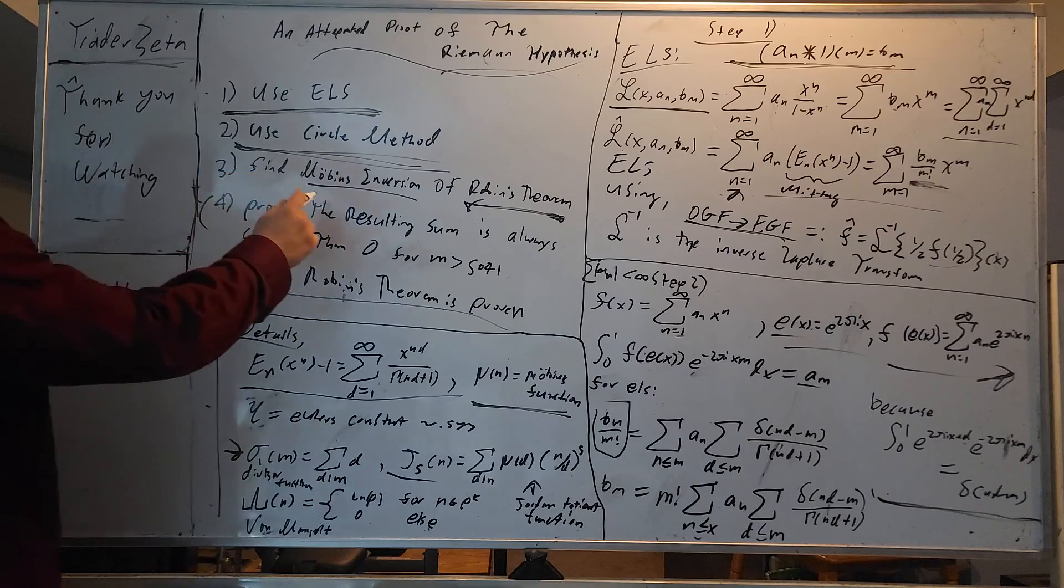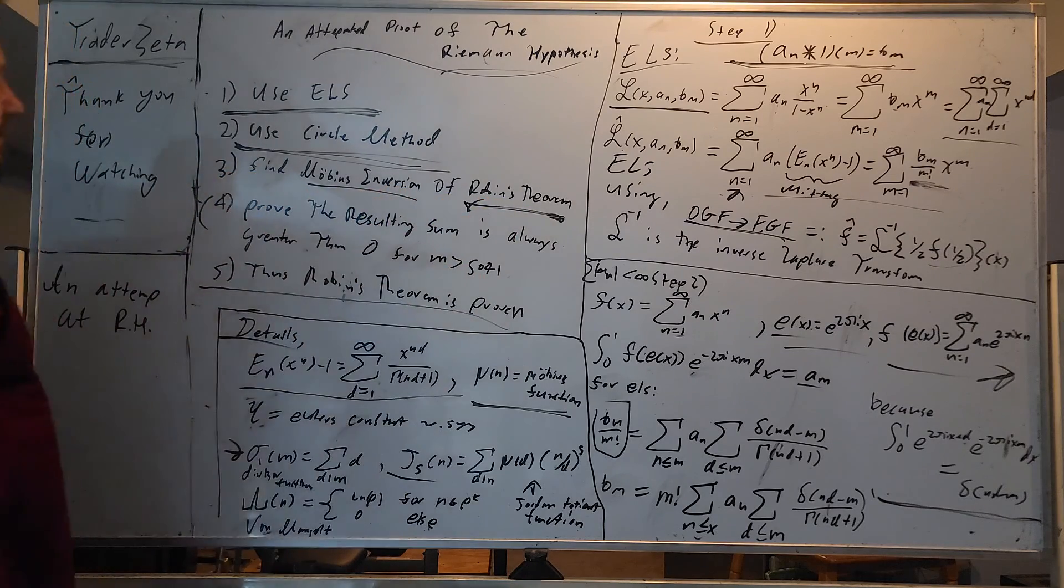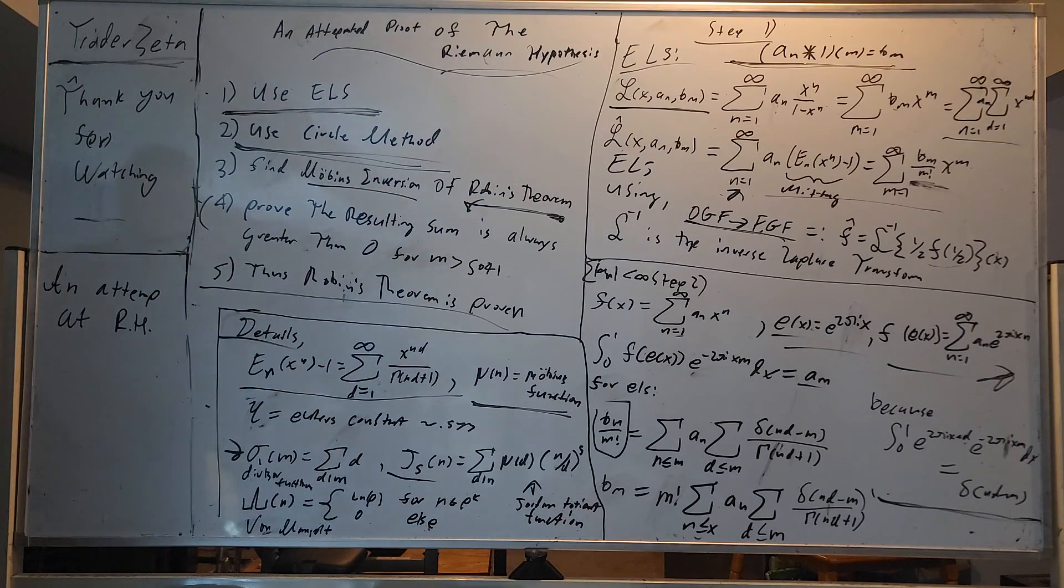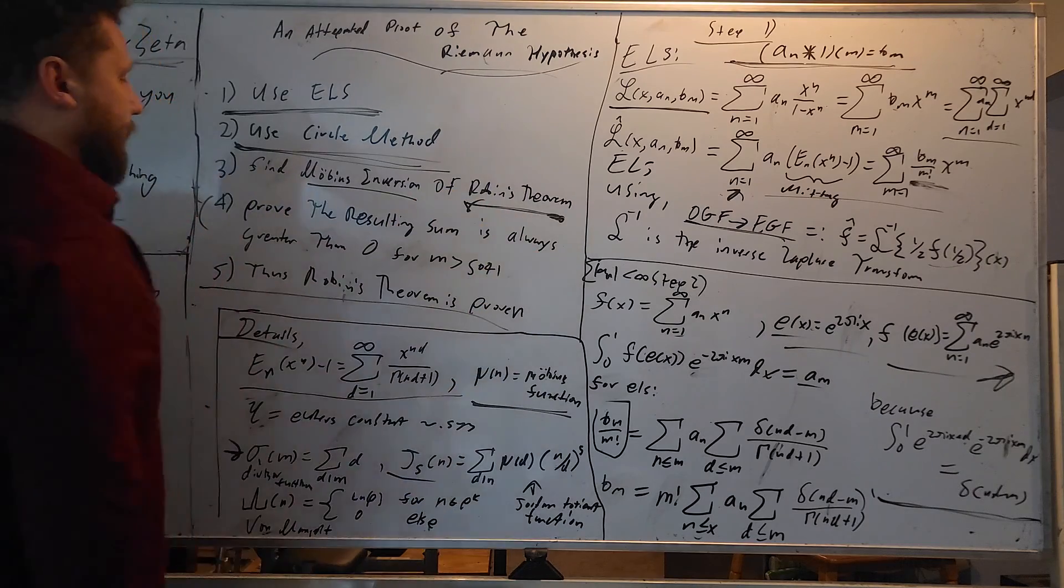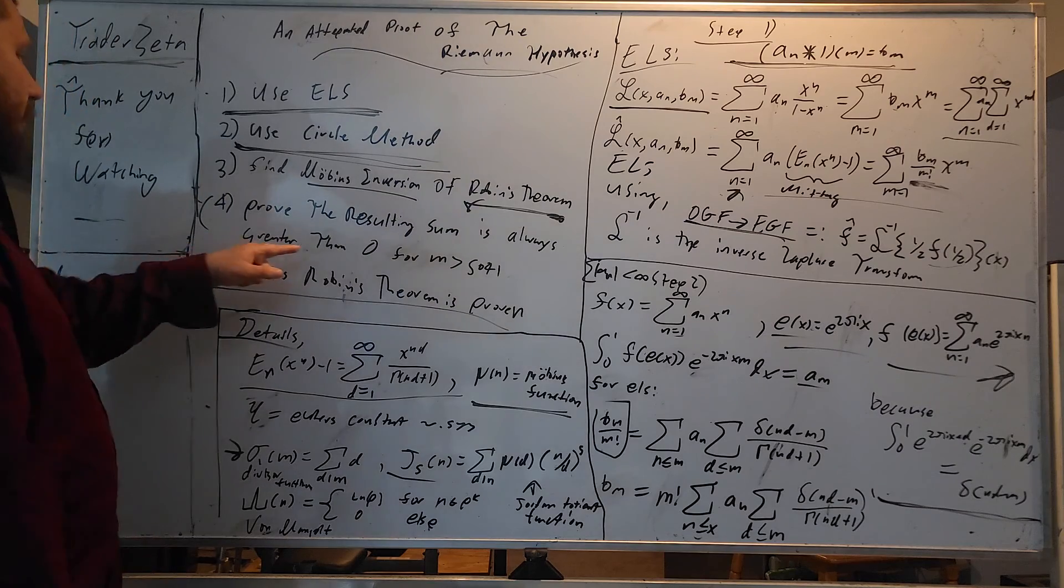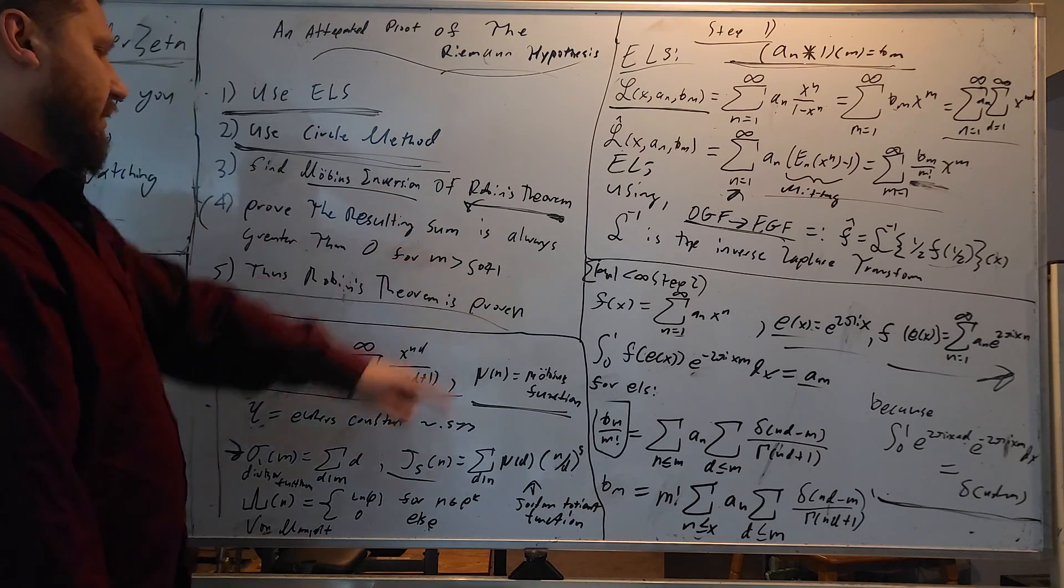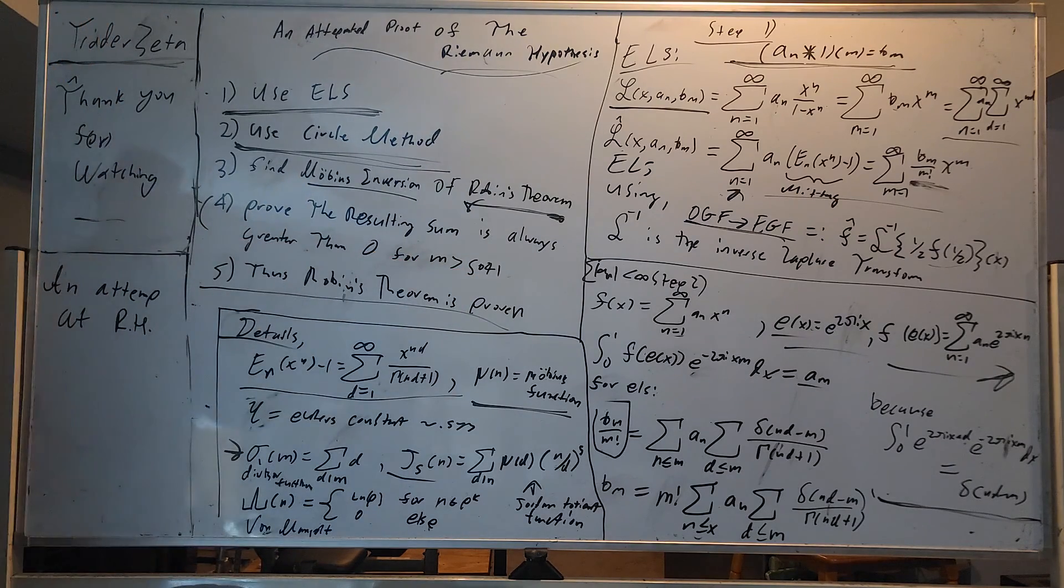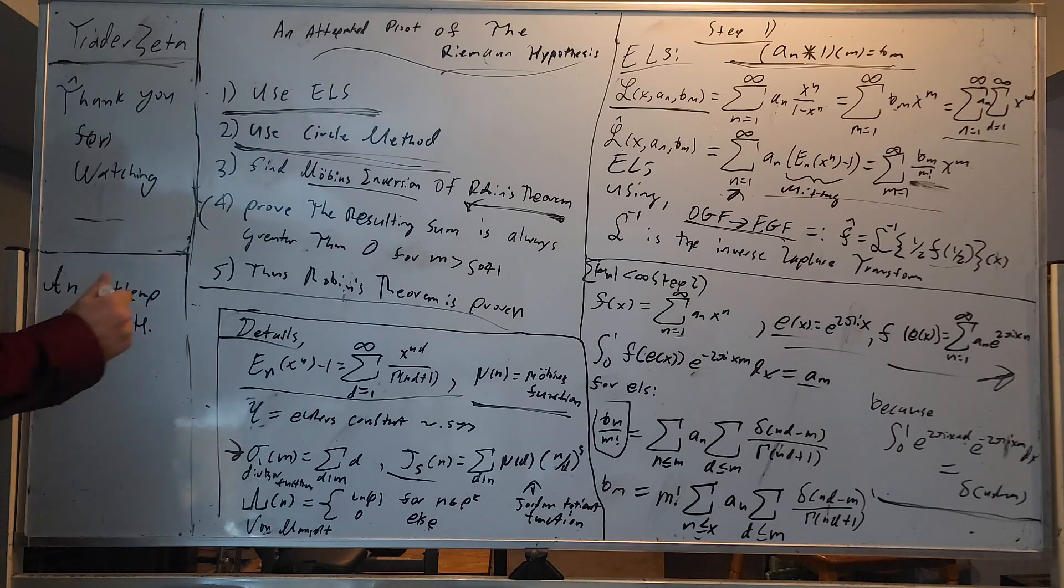Three, we are going to find the Möbius inversion of Robin's theorem, which is going to be really interesting. Robin's theorem has a lot to do with the Riemann Hypothesis. Four, we are going to prove the resulting sum is always greater than 0 for m greater than 5041.